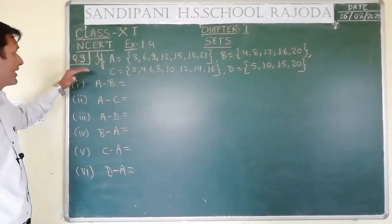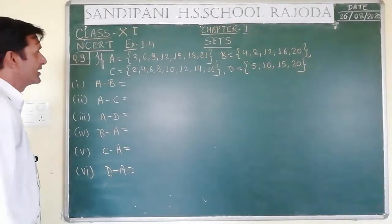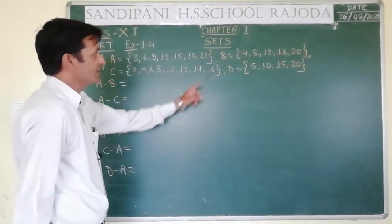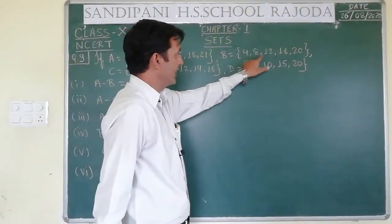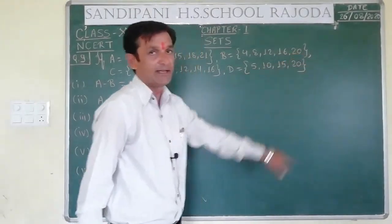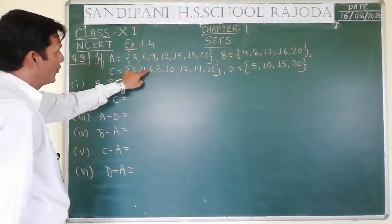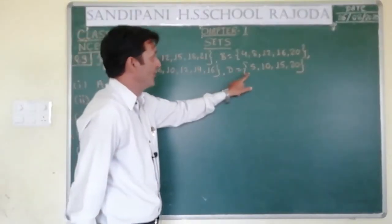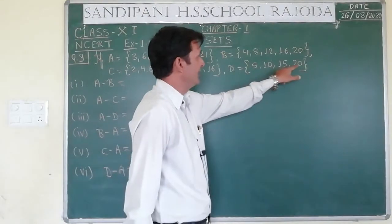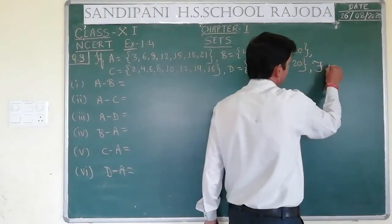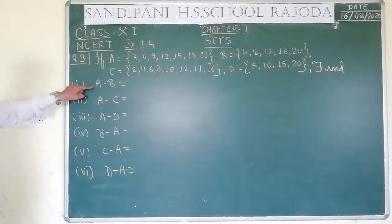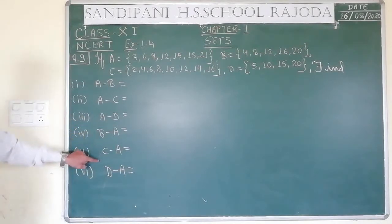Now see question number 9. If set A = {3, 6, 9, 12, 15, 18, 21}, set B = {4, 8, 12, 16, 20}, set C = {2, 4, 6, 8, 10, 12, 14, 16}, and set D = {5, 10, 15, 20}, then find: A minus B, A minus C, A minus D, B minus A, C minus A, and D minus A.